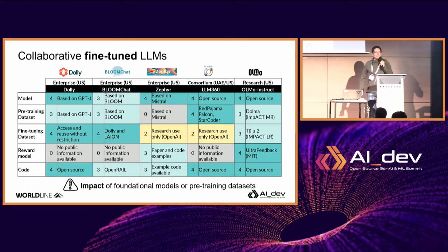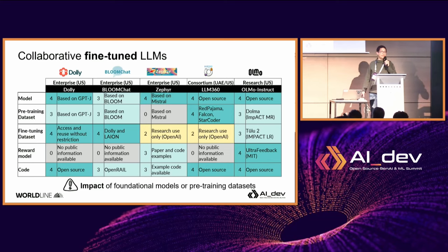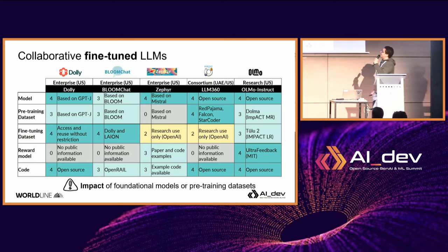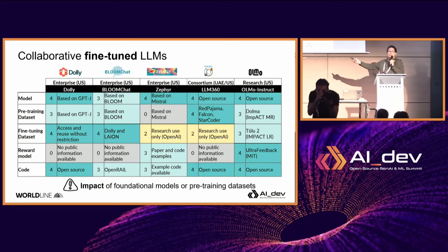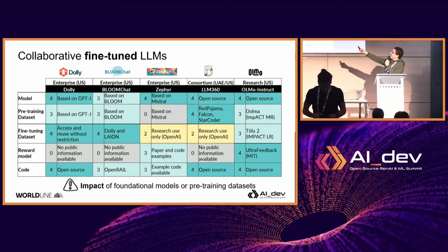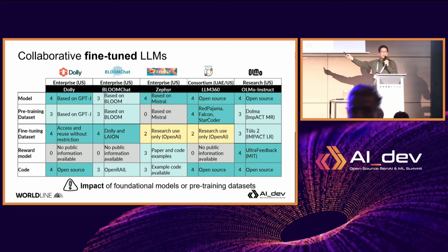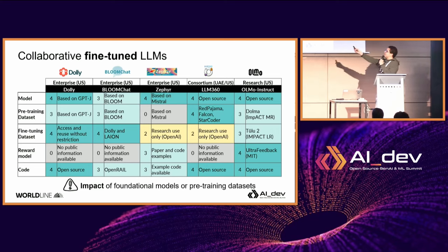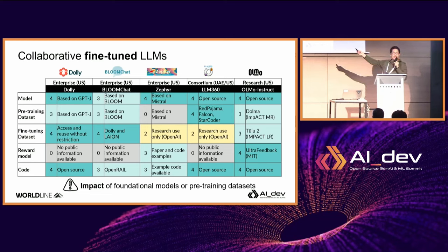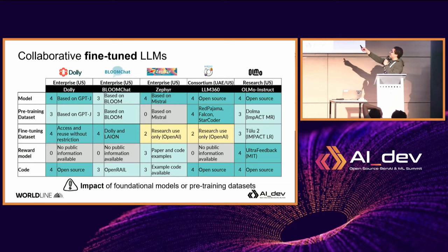As soon as you have a fairly open model, other people can reuse them and build on top of them. Some of these derived models are now quite old — it's moving so fast. Dolly from Databricks is based on GPT-J from Eleuther AI. BloomChat, from the name, is based on BLOOM. Zephyr is a fine-tuned version of Mistral done by Hugging Face. They inherit the level of openness from the upstream model on the model weights and pre-training dataset, and then depending on the community and business model, they may have fine-tuned datasets that are more or less open.